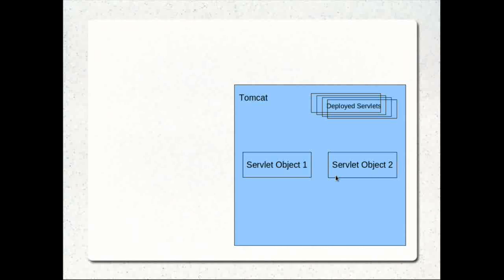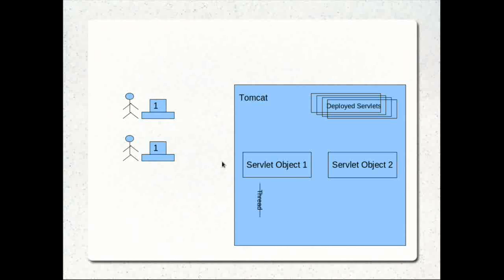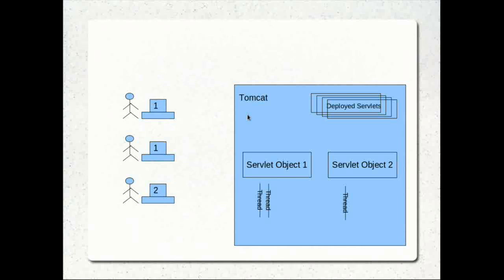Say we have two servlet objects and a user wants to access a URL served by servlet object one. When the request comes in, Tomcat first checks if the servlet object is already instantiated. If it is, a new thread is created to process the request and return the response. If another user makes a request for the same servlet, it will not create a new object — it will create a new thread. Similarly, if a user accesses a URL served by object two, Tomcat checks that object two is already there.